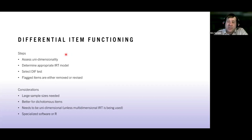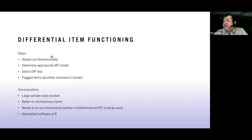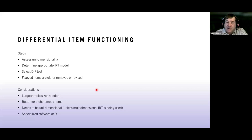The multiple steps in DIF testing: first assess the assumption of dimensionality — IRT requires unidimensionality unless you're doing multidimensional IRT. Then select the appropriate IRT model: is it a Rasch model with just difficulty, or is there a discrimination parameter showing how well items distinguish low from high ability? Then select the DIF test, run it, and flag items for removal or revision by a committee.